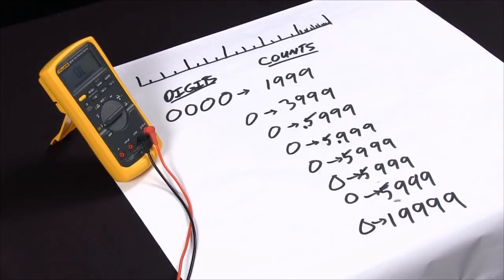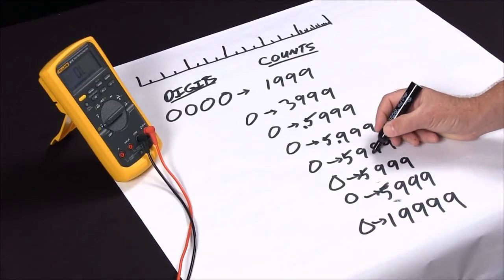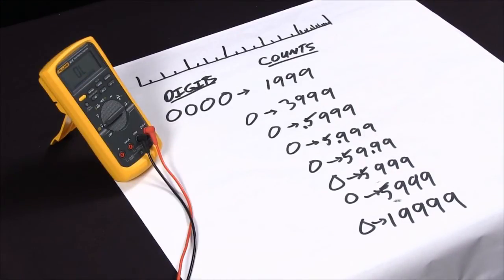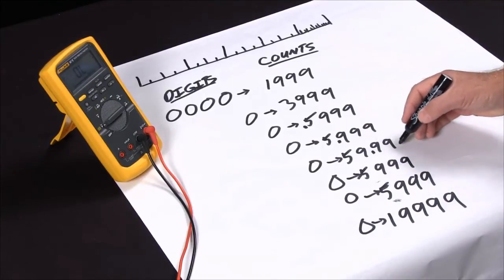If I move it up again, now I'm in the 60-volt range. I still can't read 120 volts, but now my resolution is two places.